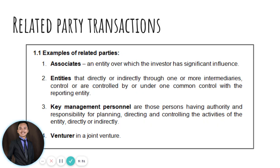Here are examples of related parties. Number one, we have associates — entities over which the investor has significant influence. For example, ABC Company is an associate of XYZ Company, and the parent company will be reporting whatever transactions it has together with its associates.